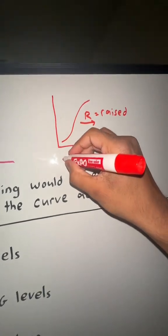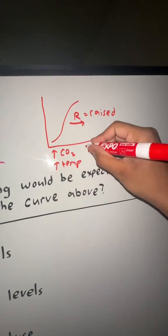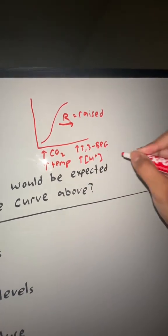Everything's going to be raised or elevated, so CO2 is going to be elevated, temperature is elevated, 2,3-BPG is elevated, and hydrogen ion concentration is elevated.